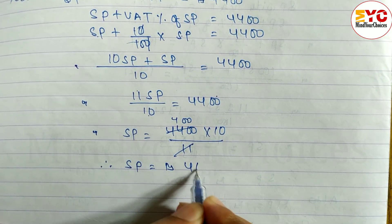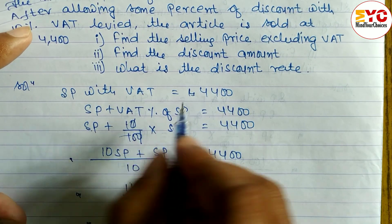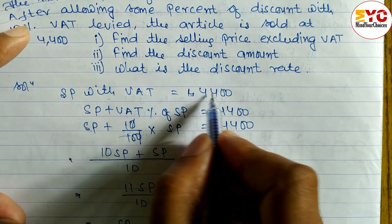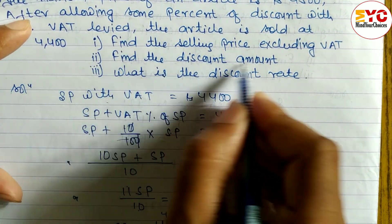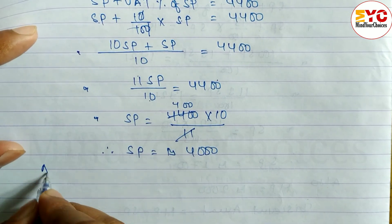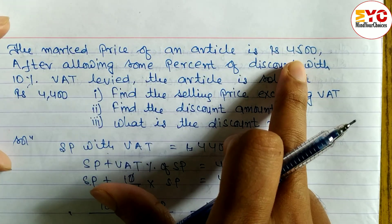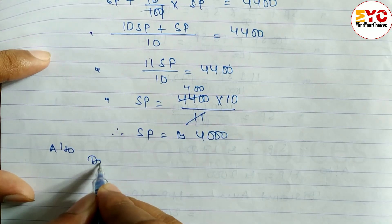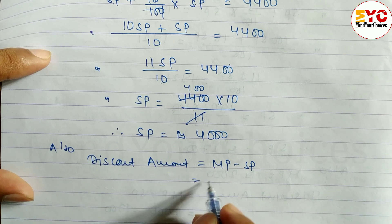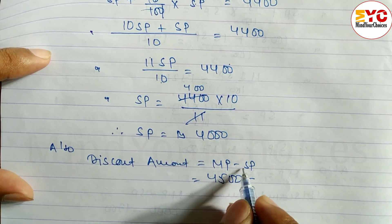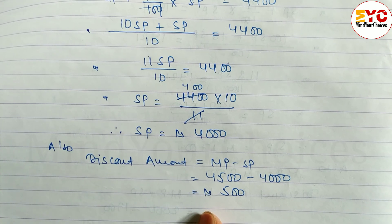So SP including VAT is Rs. 4400, and selling price excluding VAT is Rs. 4000. Now to find discount amount, the formula is MP − SP. MP is already given as Rs. 4500, SP = 4000. Discount amount = 4500 − 4000 = Rs. 500.